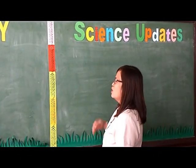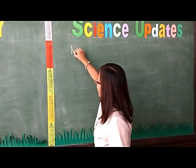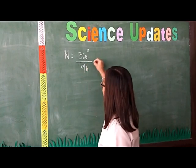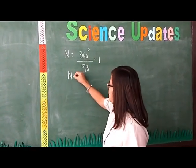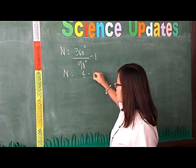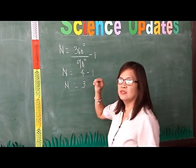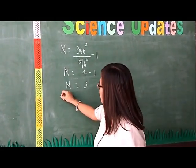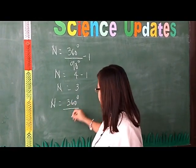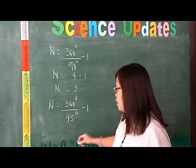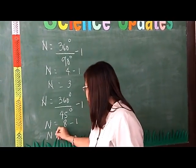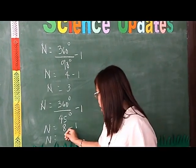Let's try 90 degrees: n = 360 divided by 90, which gives 4, minus 1. Therefore, n equals 3. Let's also try 45 degrees: n = 360 divided by 45, minus 1. So the number of images formed at a 45-degree angle is 7.